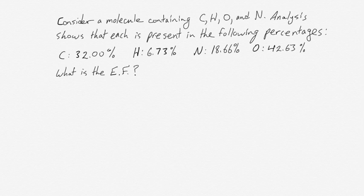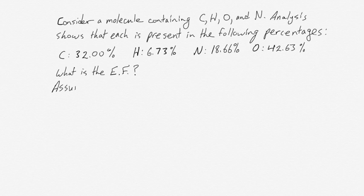We have taught you how to convert masses into moles, so what we have to do is figure out a way to convert those percentages into grams. What we can do is say that in any size sample of this compound, those percentages are going to be true. If you have 10 grams or 100 grams or 6,000 grams, the percentages will always hold. So what we do is we assume 100 grams — that's the easiest option — and then those percentages are directly mapped onto the masses.